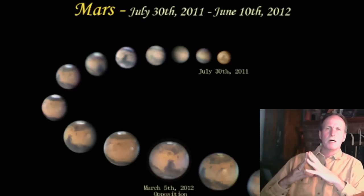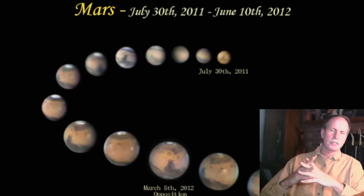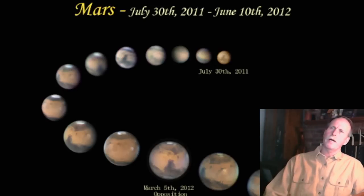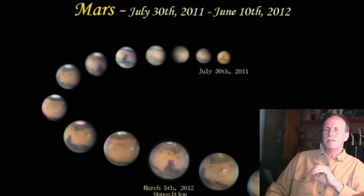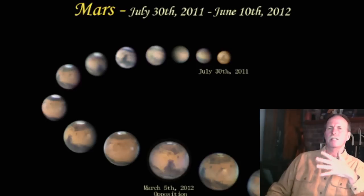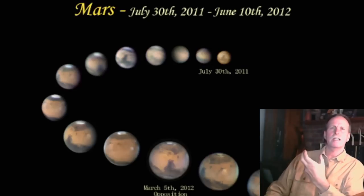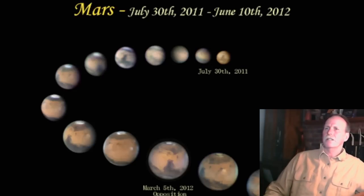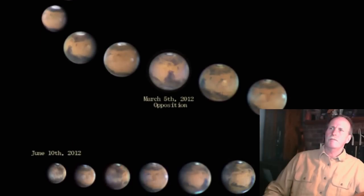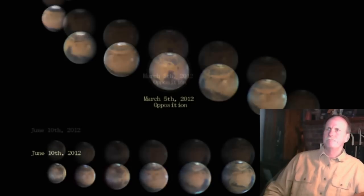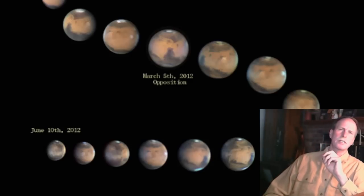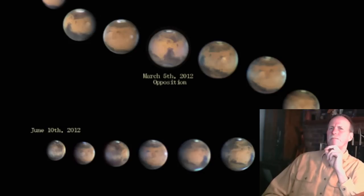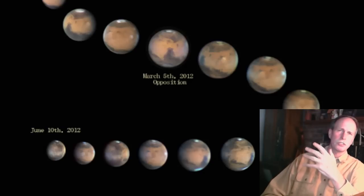Looking at photographs of Mars taken between July 2011 and June 2012, we see a couple of interesting things. Mars starts off quite small on June 30th, 2011, and as we come around, Mars gets closer and closer, growing in size. On March 5th, 2012, Mars is in opposition to Earth, meaning there's a direct line from the Sun through Earth to Mars — it's at its closest point. Then as it goes around the Sun, it gets smaller until June 2012. But at no time does Mars exhibit any phases, because Mars is further away from the Sun than Earth is. If Mars were closer to the Sun than Earth, it would exhibit phases, much like our Moon does.